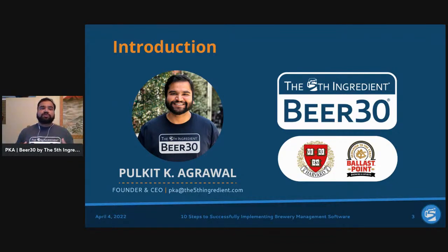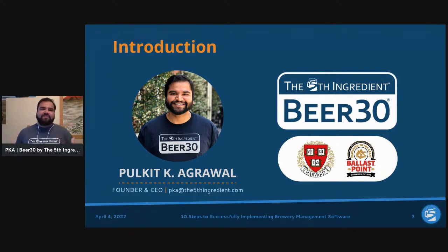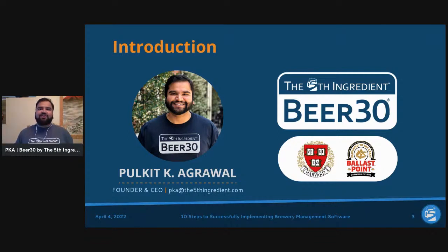During that time I realized there were other softwares in the industry, and yet most people were still using paper logs, whiteboards, and spreadsheets for process tracking. That's really where Beer 30 came about. It's been a few years now and Beer 30 is constantly growing — serving breweries doing as low as 70 barrels a year all the way up to 60,000 barrels a year.